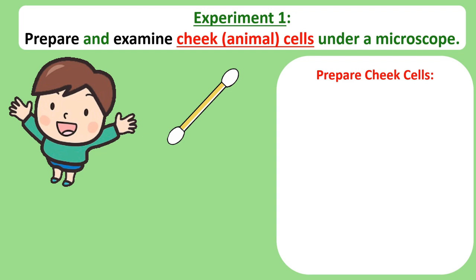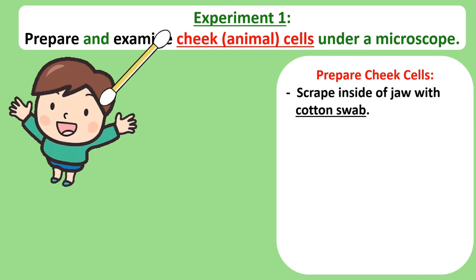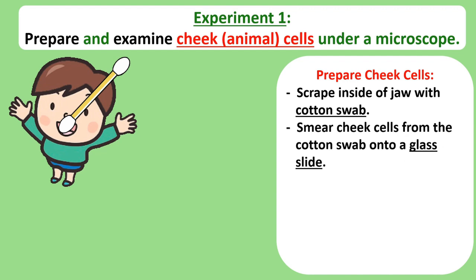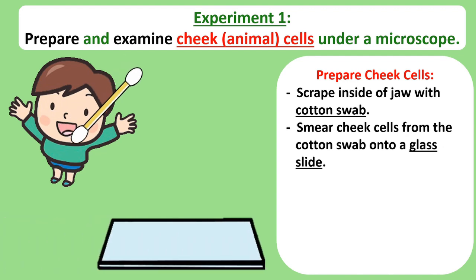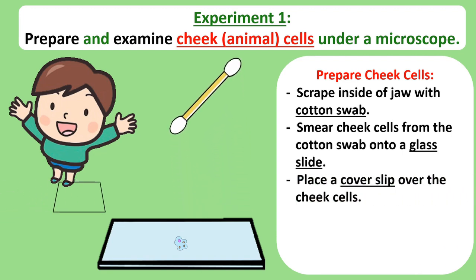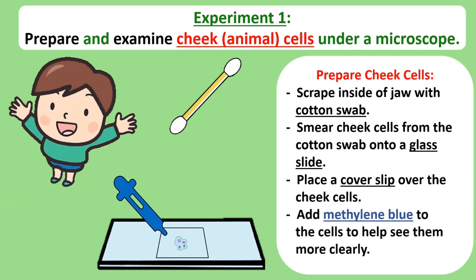The animal cells you collect are your very own cheek cells that you retrieve from inside your mouth. The first thing you do is get a cotton swab and gently scrape the inside of your mouth along the inside of your jaw to gather these animal cheek cells on a swab. Then take the swab out of your mouth and smear the cells onto a glass slide. Place a cover slip over the cheek cells to protect both the cheek cells and the microscope. And then lastly, add two or three drops of a blue liquid called methylene blue to the glass slide. This will make the nucleus and cell membrane really stand out when you look at them.